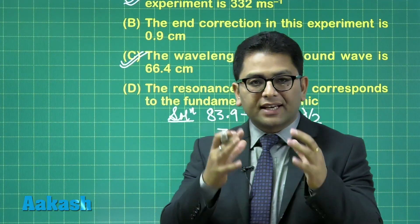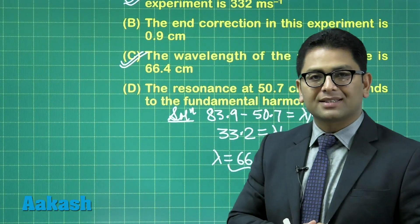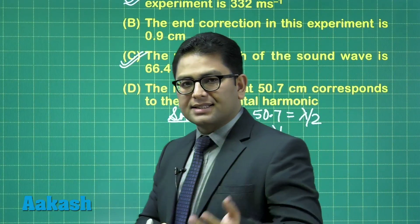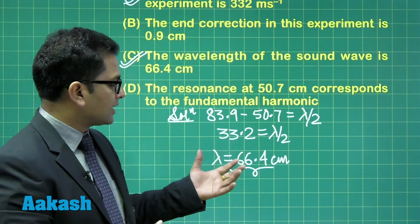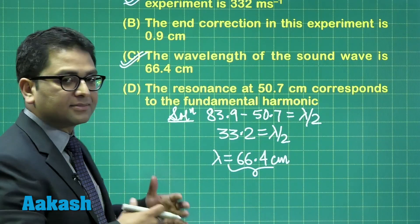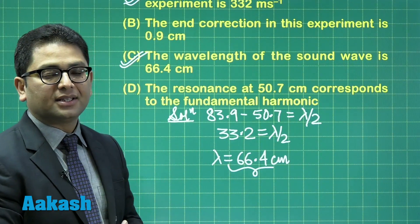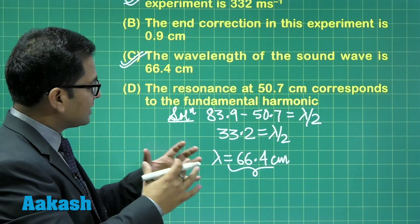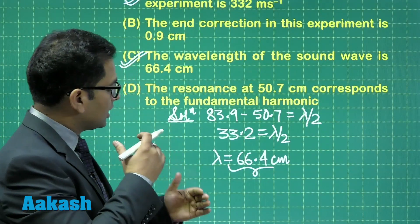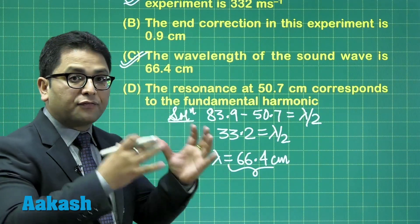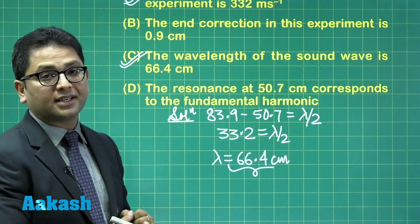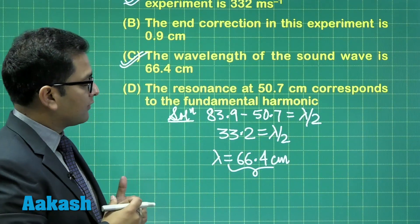Why did I say very close? Because the end correction has to be considered. And for 66.4 centimeter, the one-fourth value would come something around 16 centimeter. So, that 16 centimeter is that's a length of the first resonance when it is heard, because that's lambda by 4.